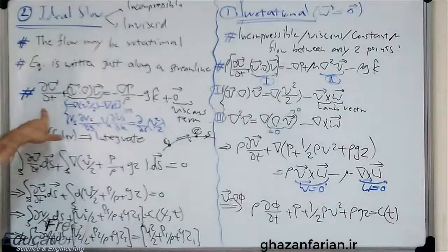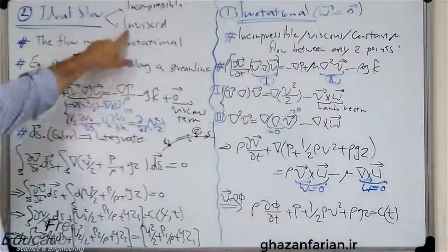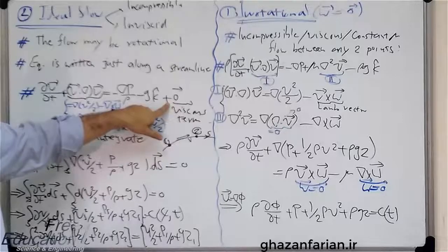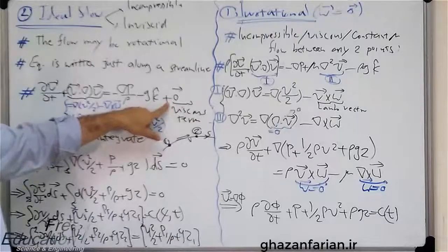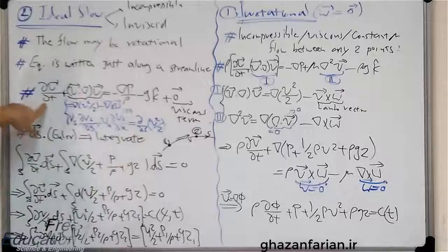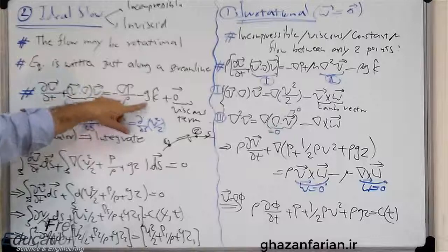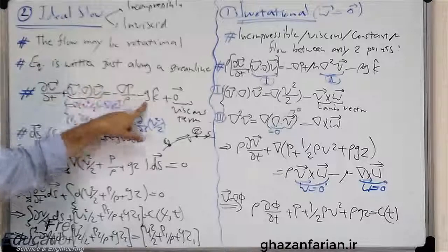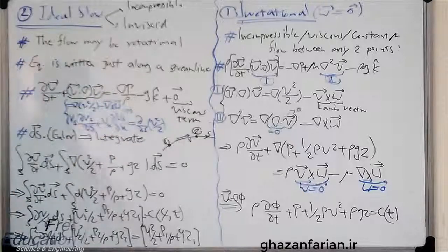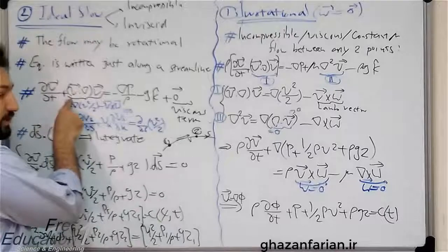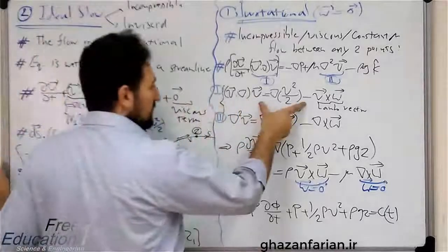This is the Euler's equation because the flow is inviscid and the viscous term is zero. The Navier-Stokes equation without the viscous term is called the Euler's equation. This is the local derivative or local acceleration. This is the non-linear term, the pressure term, and the gravity force. I explained the non-linear term using this vector identity.